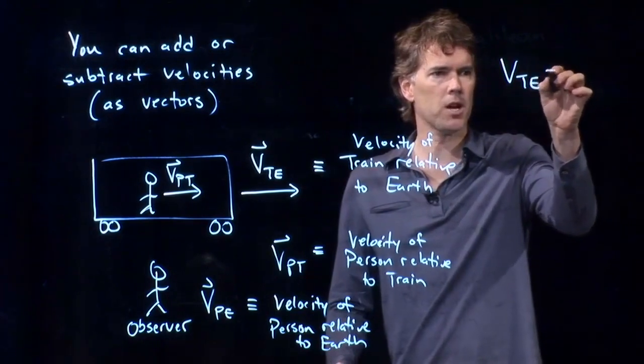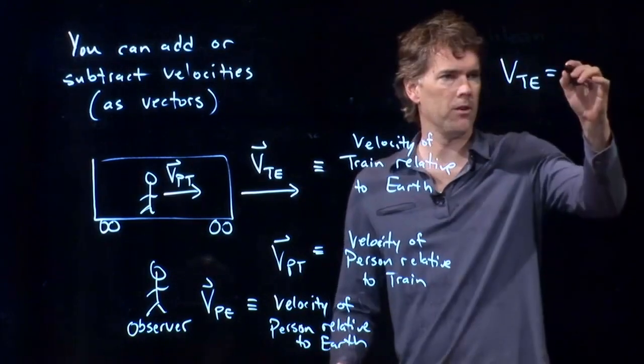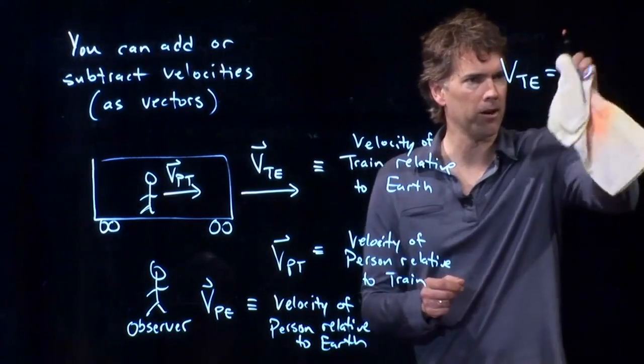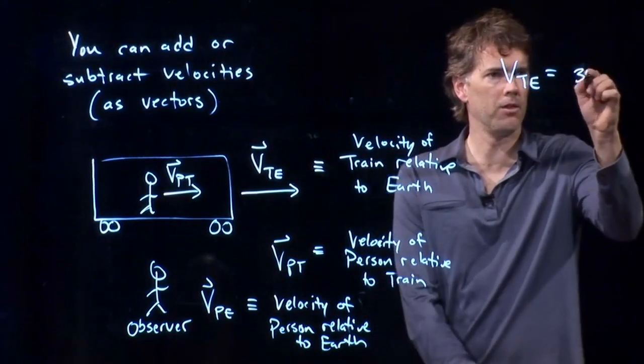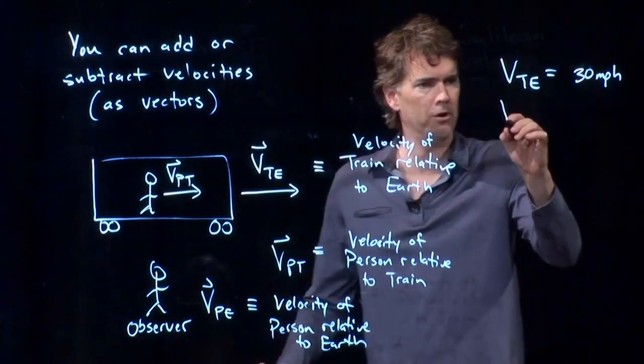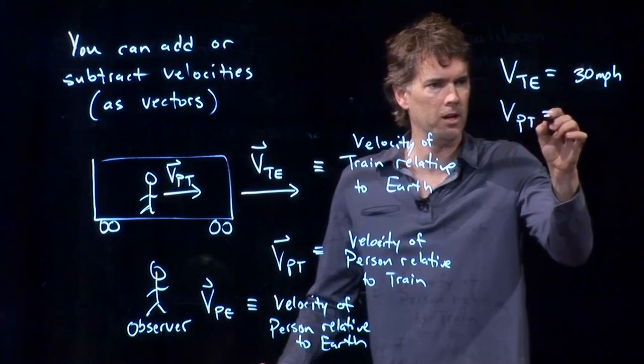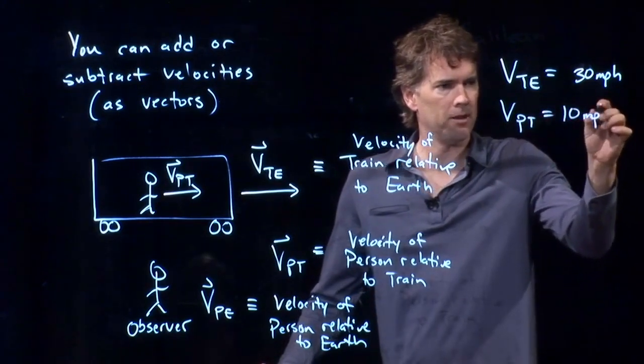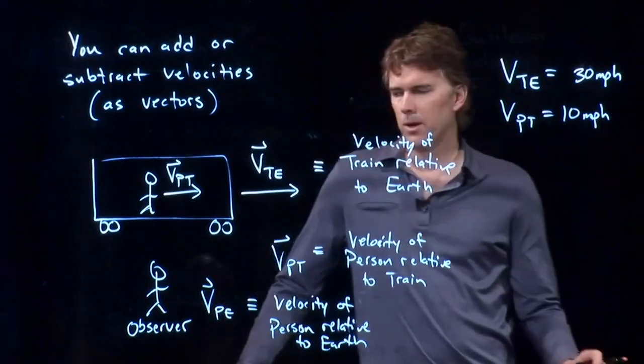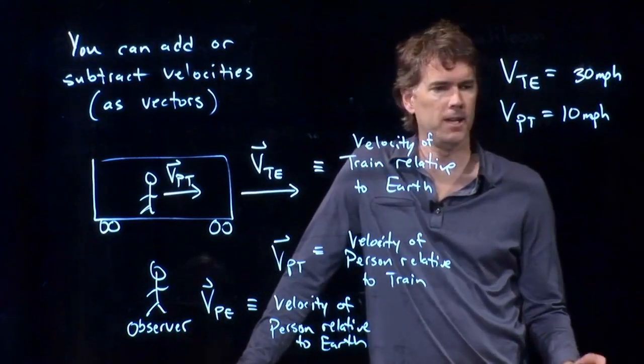So let's put the numbers on it like that. Let's say that the speed of the train relative to the Earth is 30 miles per hour, and the speed of the person on the train is 10 miles per hour. 30 miles per hour, maybe faster than a walk, more like a run.